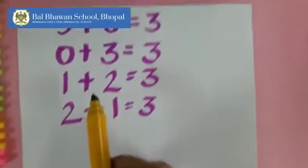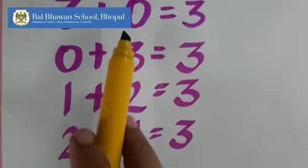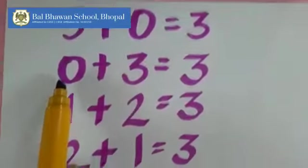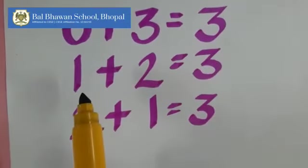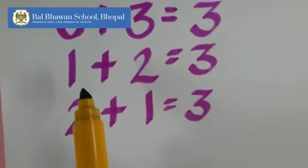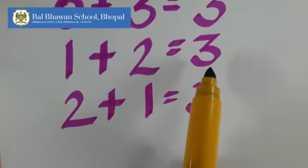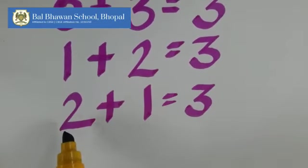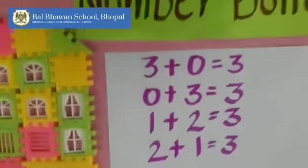The next number is three. Here 3 + 0 = 3. We will change their places. 0 + 3 is also 3. Now can you guess any other fact by which we can get 3? 1 + 2 = 3. And changing the places of these numbers, 2 + 1 is also 3. This is how we make number bonds.